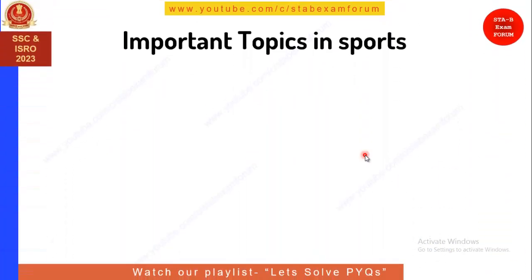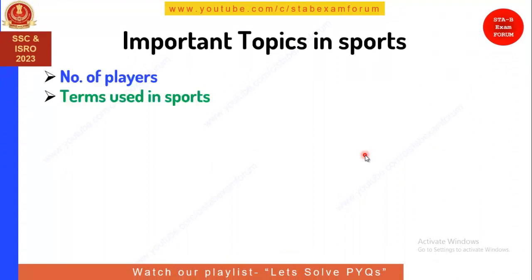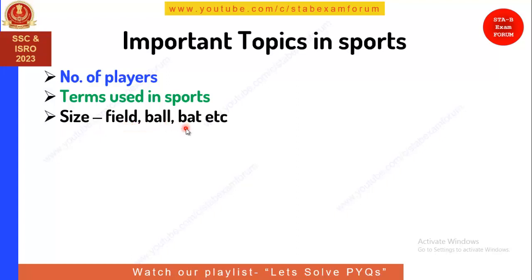There are many important topics in sports: number of players in a game; terms used in sports, like if I ask what sport uses a back-stick or a caddy, you should know all these terms. The next important topic is size — field size, ball or bat size — but these days exams are generally not asking about size, so you can ignore that. Then there are trophies and which sport each trophy is associated with.